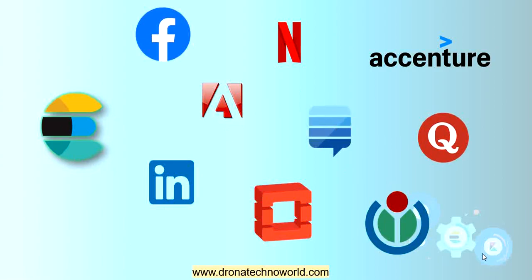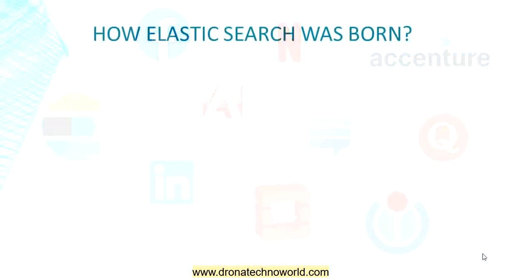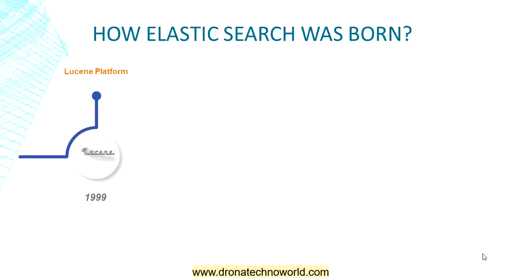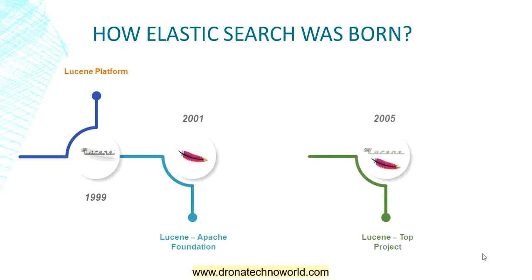Now we know the presence of Elasticsearch. Would you like to know how Elasticsearch was born? It starts with the year 1999 when the platform Lucene came out. After its development, Lucene was added to the Apache Foundation in 2001 and became a top level project in 2005. Lucene also included many projects such as Apache Mahout as well as HDFS. The nature of Lucene helped all search engines to index data from the internet and retrieve data for fuzzy matching.